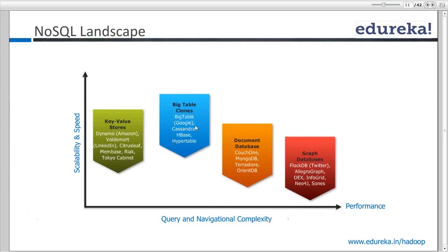Cassandra and HBase are pretty much very similar. There are also other implementations of BigTable. If you want to see what the BigTable paper is, you can look it up online — it's published by Google Research. These are basically open-source implementations of something that Google published in its research. They've been using it for indexing the web, and you can imagine that indexing all the web was a big challenge — that's a lot of data. HBase, which is implemented based on BigTable, can handle a lot of data pretty easily.